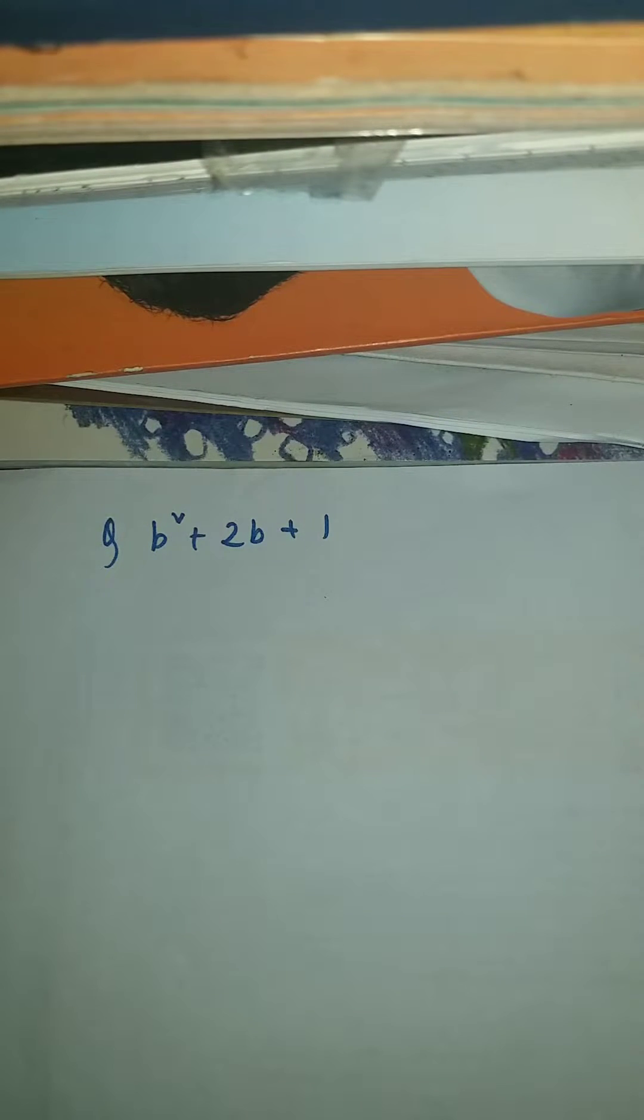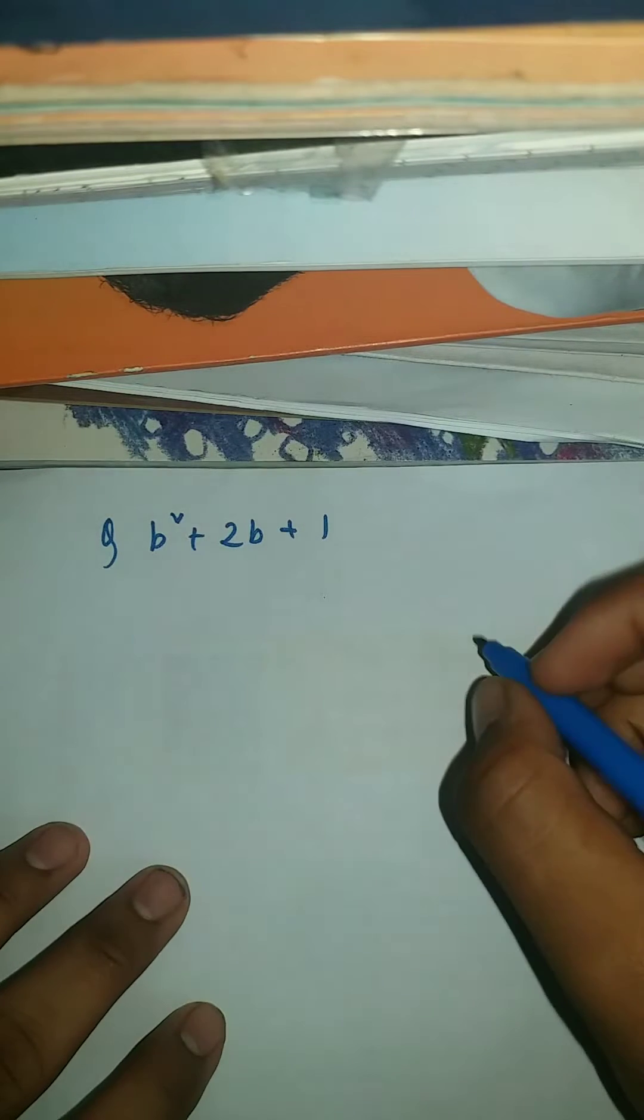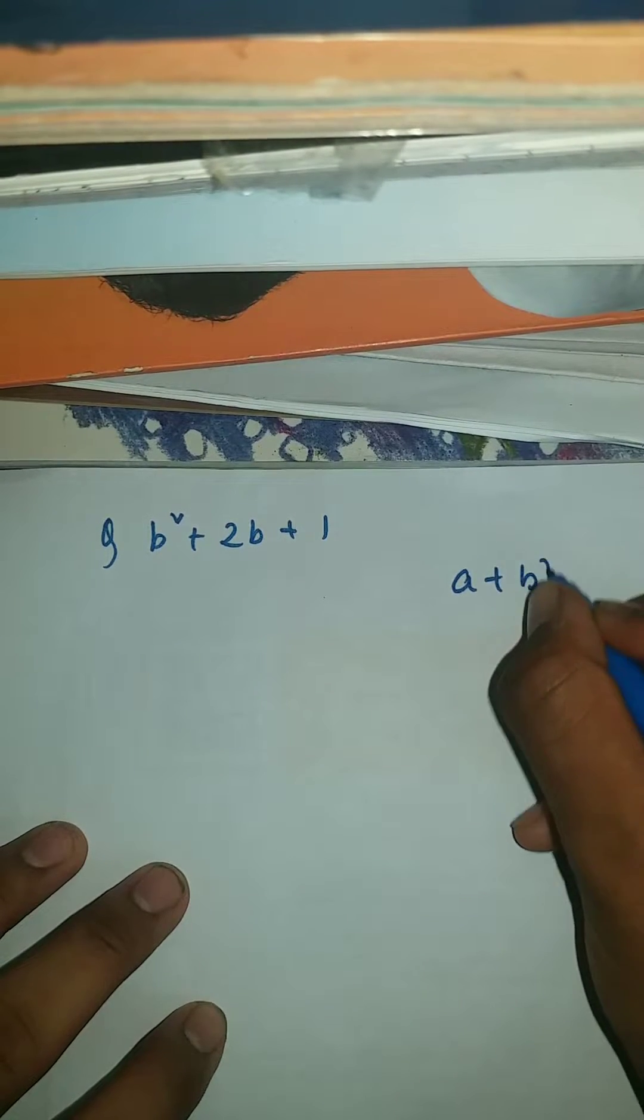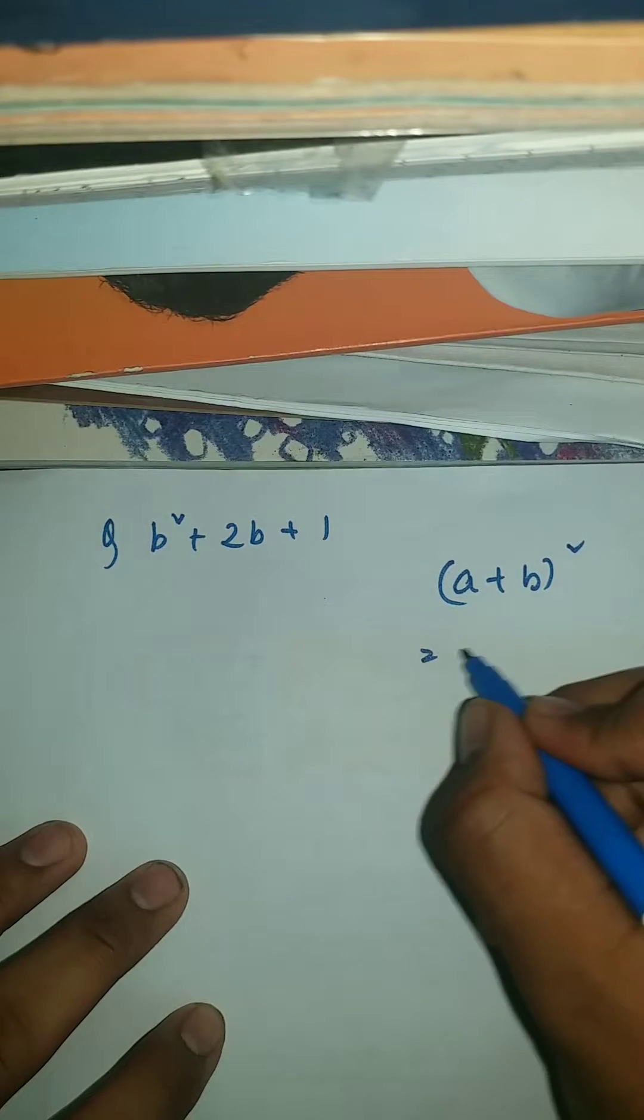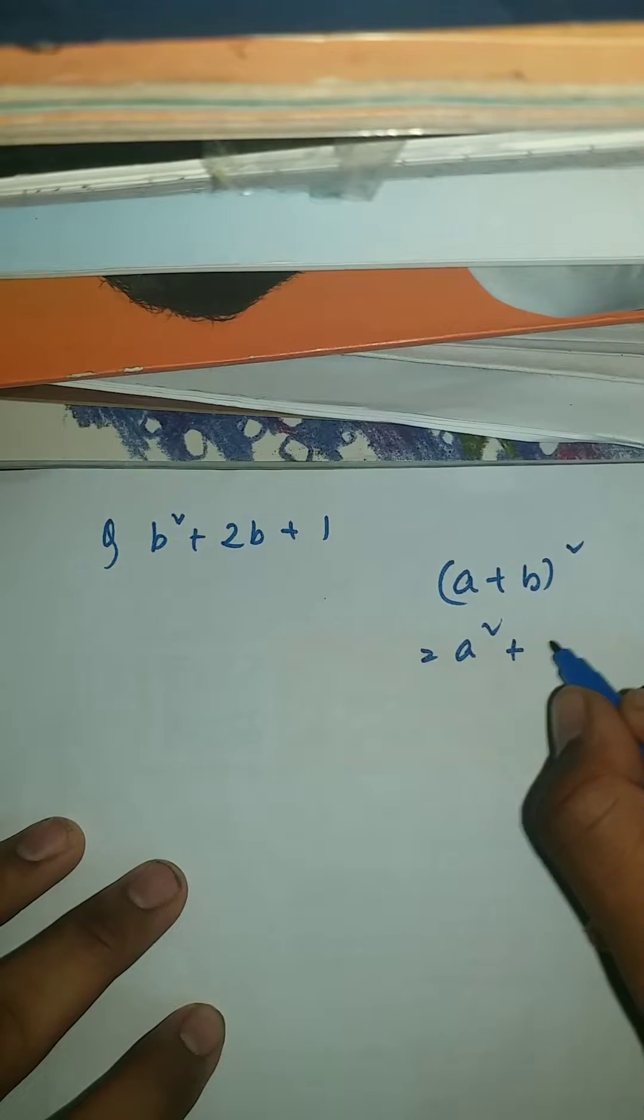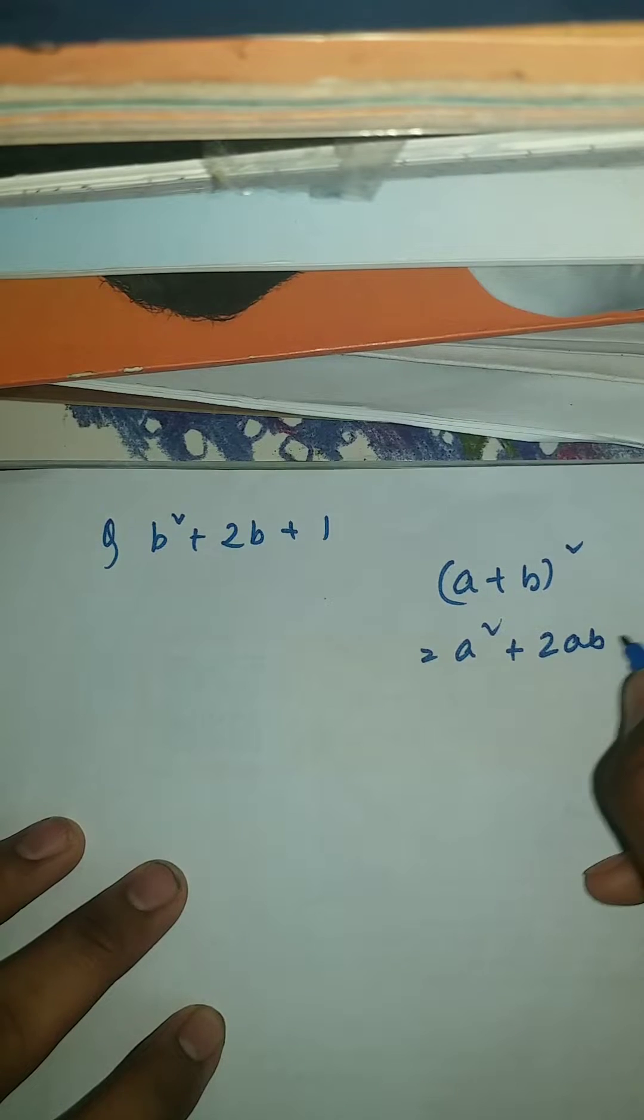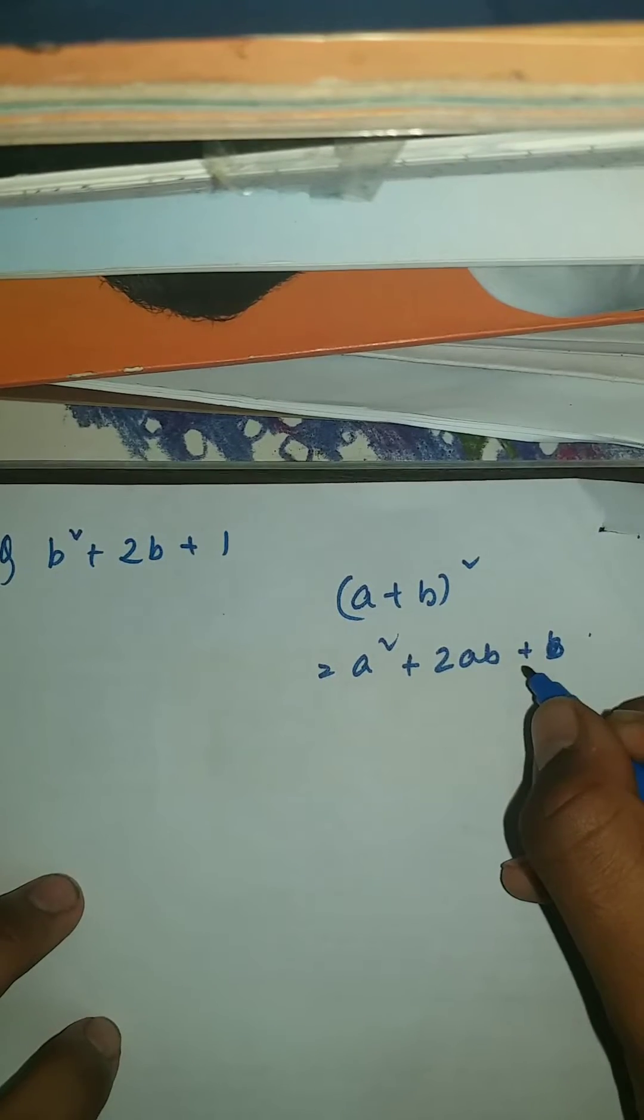Let's get started. As you can see, we can't do this question by middle term splitting. There is an easy method that I am going to tell you. It is (a+b)² which is a² + 2ab + b².